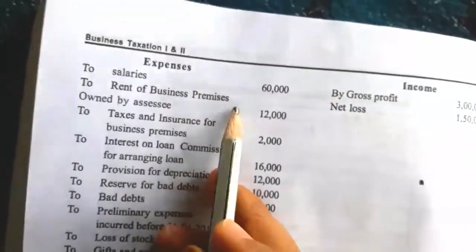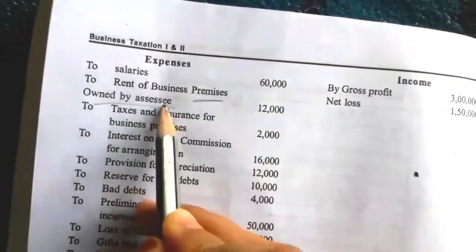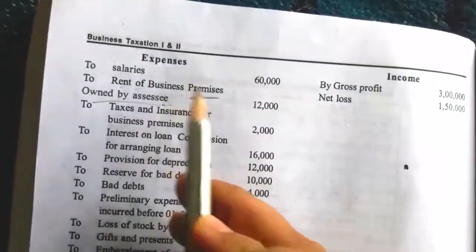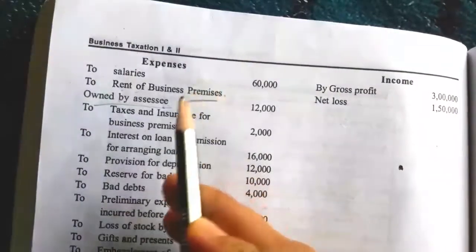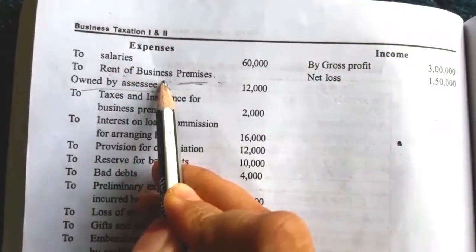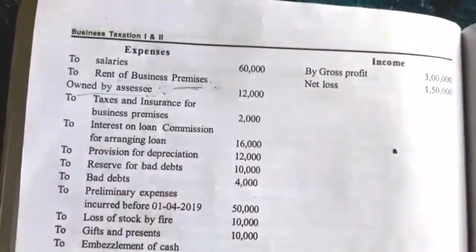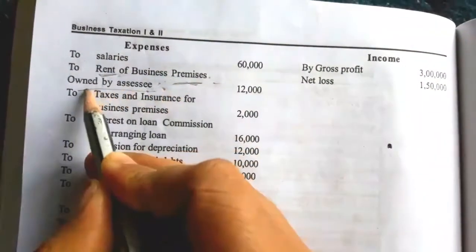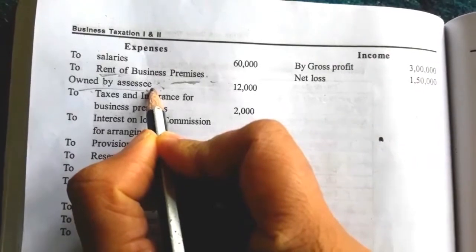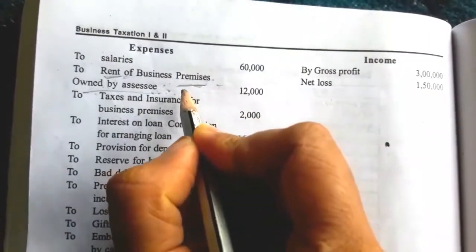Rent of business premises owned by SSC — if a premises or building is owned by SSC, then rent paid is disallowed. In theory, if a business premises used for business is owned by the assessee, the rent paid is disallowed. Other expenses such as repairs, taxes, and insurance paid are allowed. Only the rent paid is disallowed in the case of premises owned by the assessee, because when he is the owner, rent paid is treated as a disallowed expense.